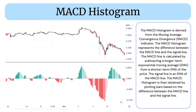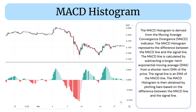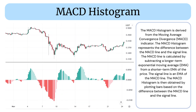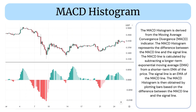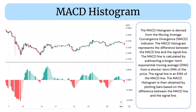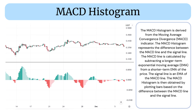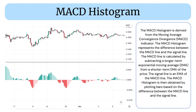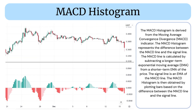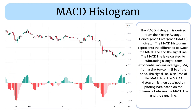MCD Histogram: Definition and Calculation. The MCD Histogram is derived from the Moving Average Convergence Divergence (MCD) indicator. It represents the difference between the MCD line and the signal line. The MCD line is calculated by subtracting a longer-term exponential moving average (EMA) from a shorter-term EMA of the price.